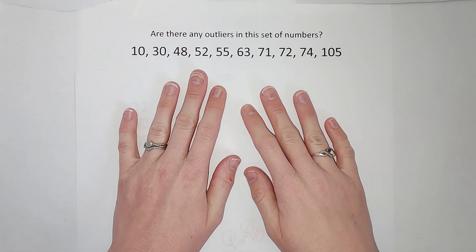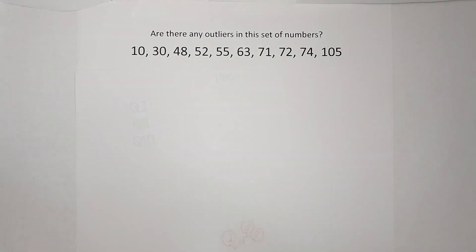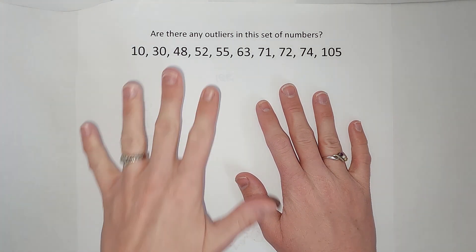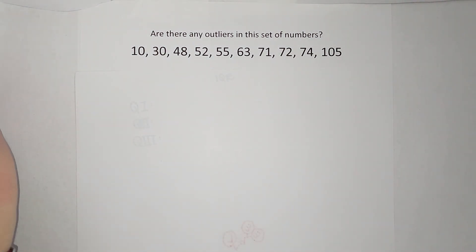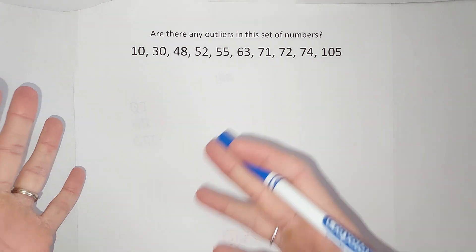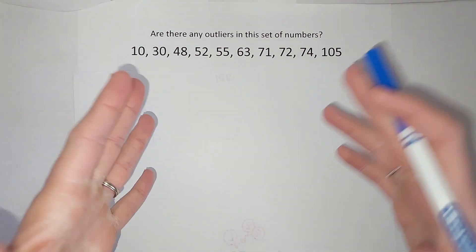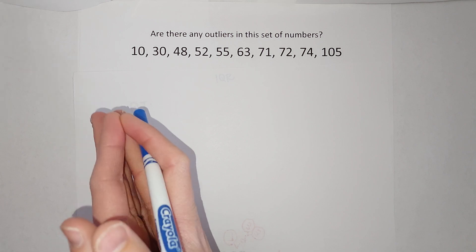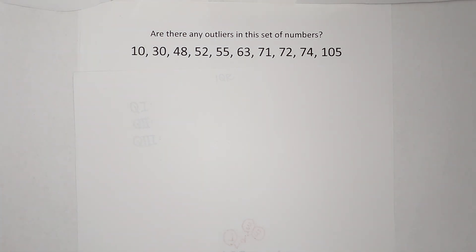This video is for you if you are making a box and whisker plot and you are starting to learn how to find the outliers, which will turn it into a modified box plot. We want to see if any of these numbers is considered an outlier. An outlier is a piece of data that is so far away from the other pieces of data that we don't want it to misrepresent our information. We still want to show that piece of data, but we don't want it to misrepresent our data. So here's how we find it.